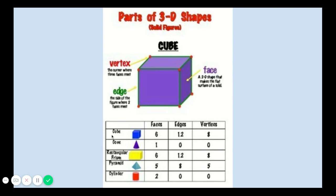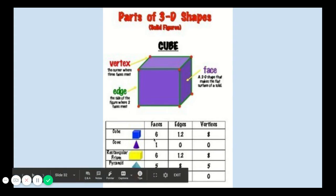So of the shapes that we learned, a cube has six faces, twelve edges, and eight vertices. A cone just has one face at the bottom, the circle, zero edges and zero vertices.